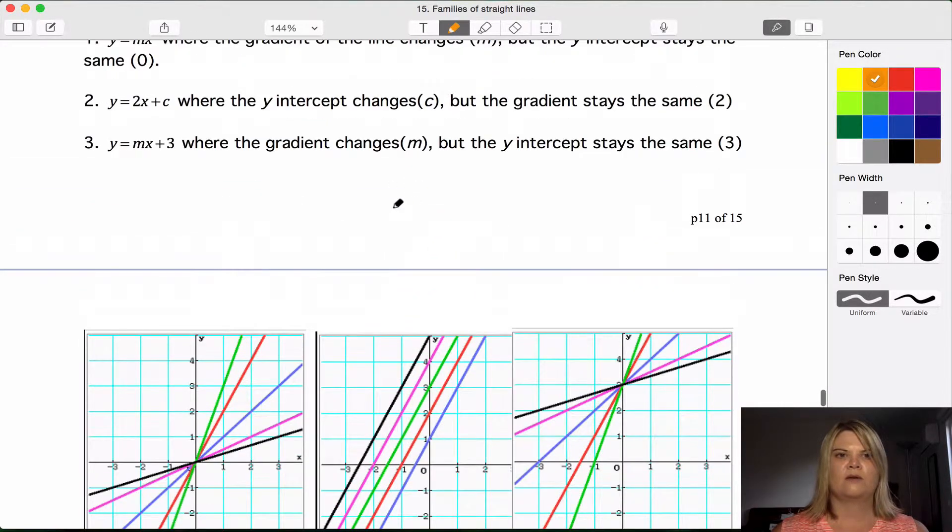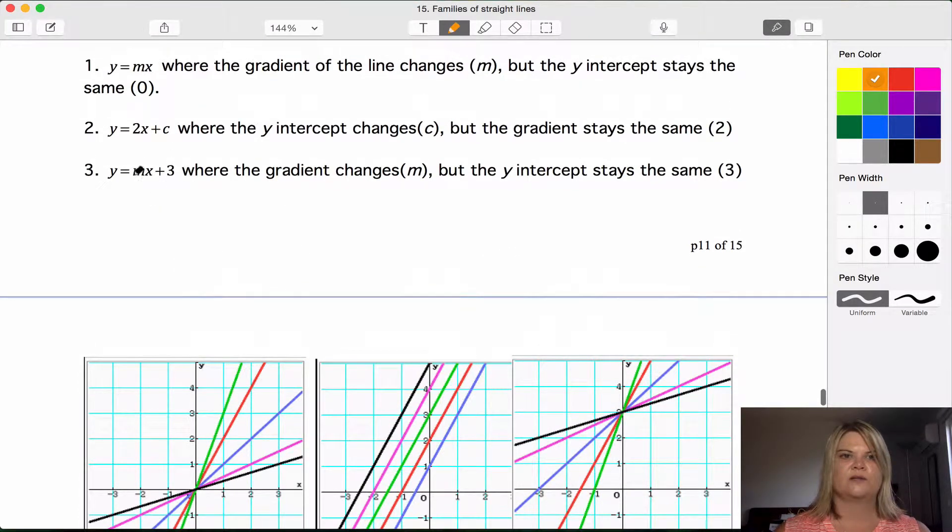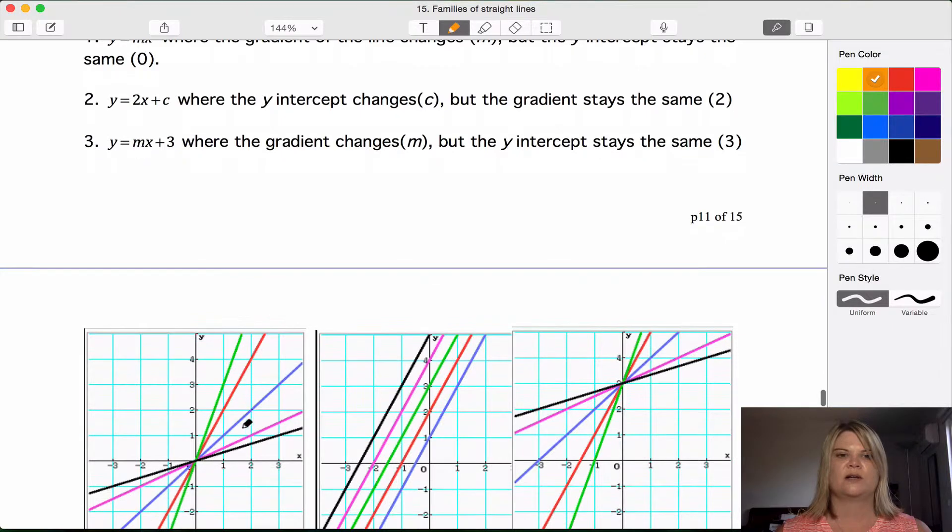The third graph that I've got here is the family of graphs y equals mx plus 3. And in this one, a lot like the first one, the gradient changes m, but the y intercept stays the same. This time the y intercept is plus 3. In the first lot our y intercept was zero, but now they're all going to go through plus 3.